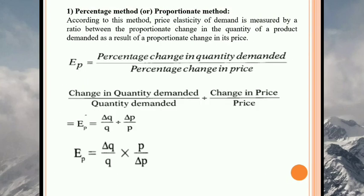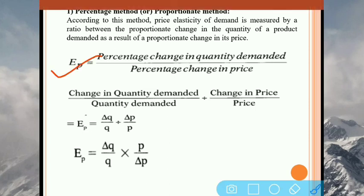So what is the percentage method or proportionate method? According to this method, price elasticity of demand is measured as the ratio between the proportionate change in quantity demanded of a product as a result of proportionate change in price. So the formula is: percentage change in quantity demanded divided by percentage change in price. Percentage change in quantity demanded is simplified as change in quantity demanded divided by original demand.